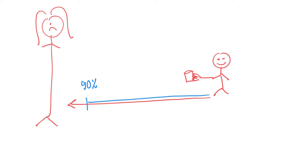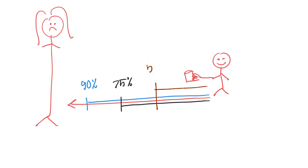Mom was upset, as you can imagine. 'What have you done? Go get me another one.' So this time, the kid went to get another glass of water. But this time, he only made it to about 75% of the distance and dropped the water, broke the glass, and mom was really upset. 'Go get me another one, big boy. Be careful this time.' This time, the kid tried the same idea but went only 50% of the distance and then dropped the glass.